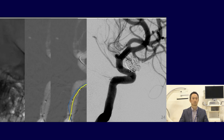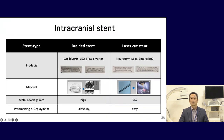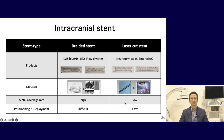An advantage of the double catheter technique is that we can decide whether to detach the first coil or not after two-coil insertion. Stent is the most stable scaffold, but dual antiplatelet therapy is needed. Neck bridge stents are divided into two types: braided stent and laser-cut stent. Braided stent is made of wire mesh with higher metal coverage rate, so a flow diverting effect can be expected. Laser-cut stent is made of metal pipe, and its positioning and deployment are very easy. We have to select the best stent for each situation.